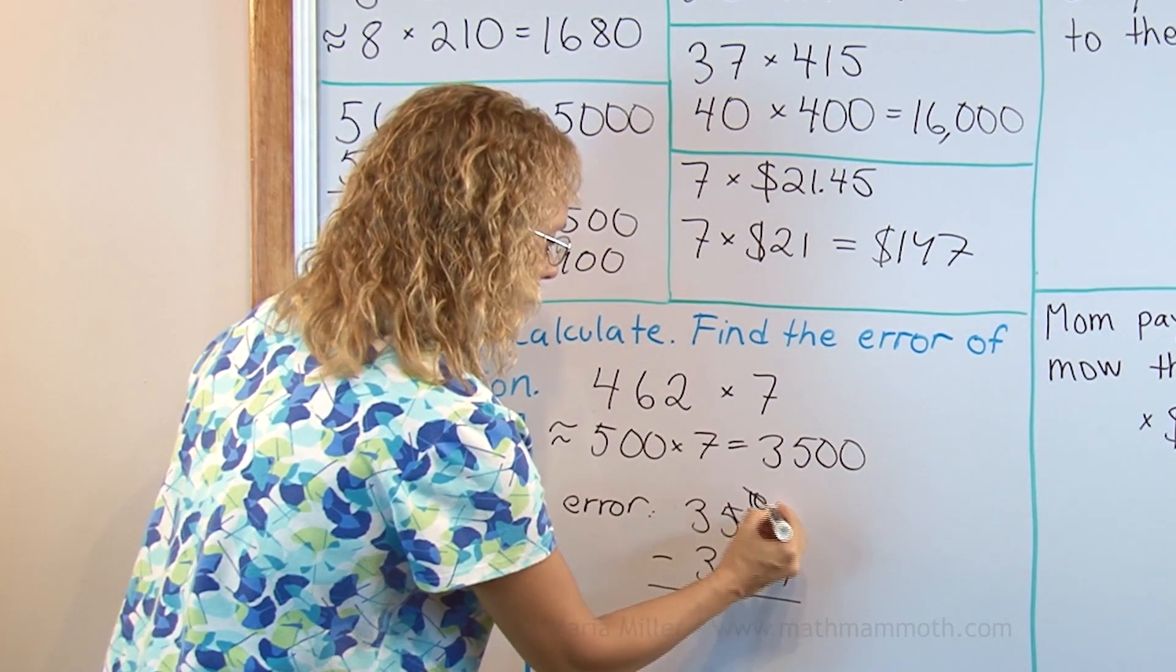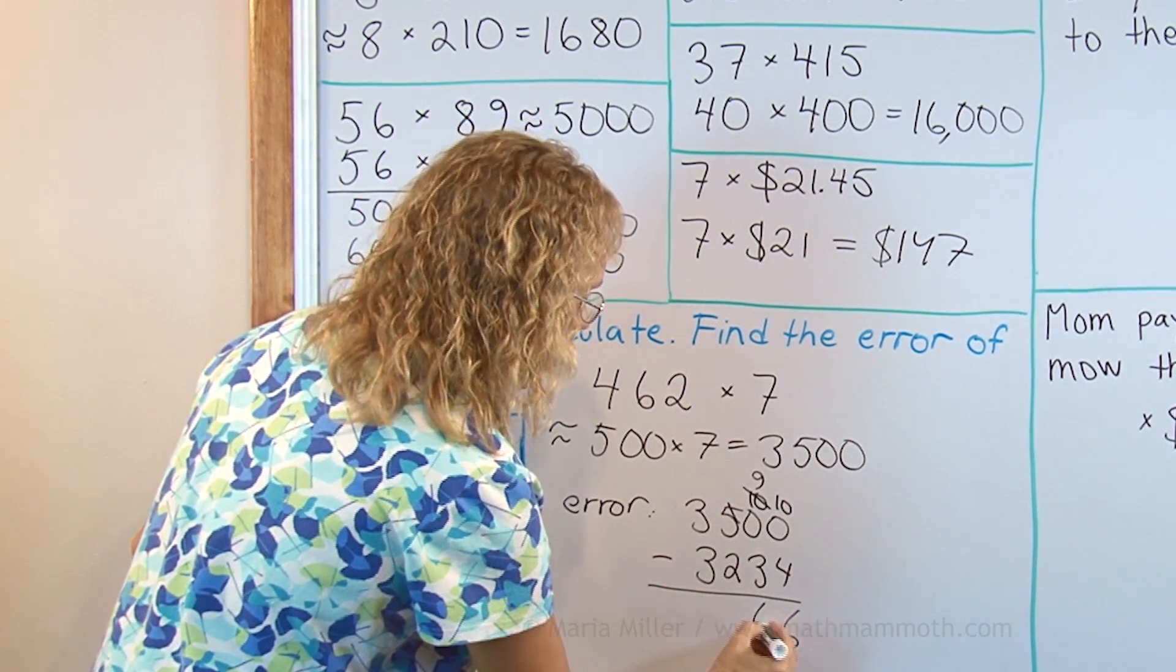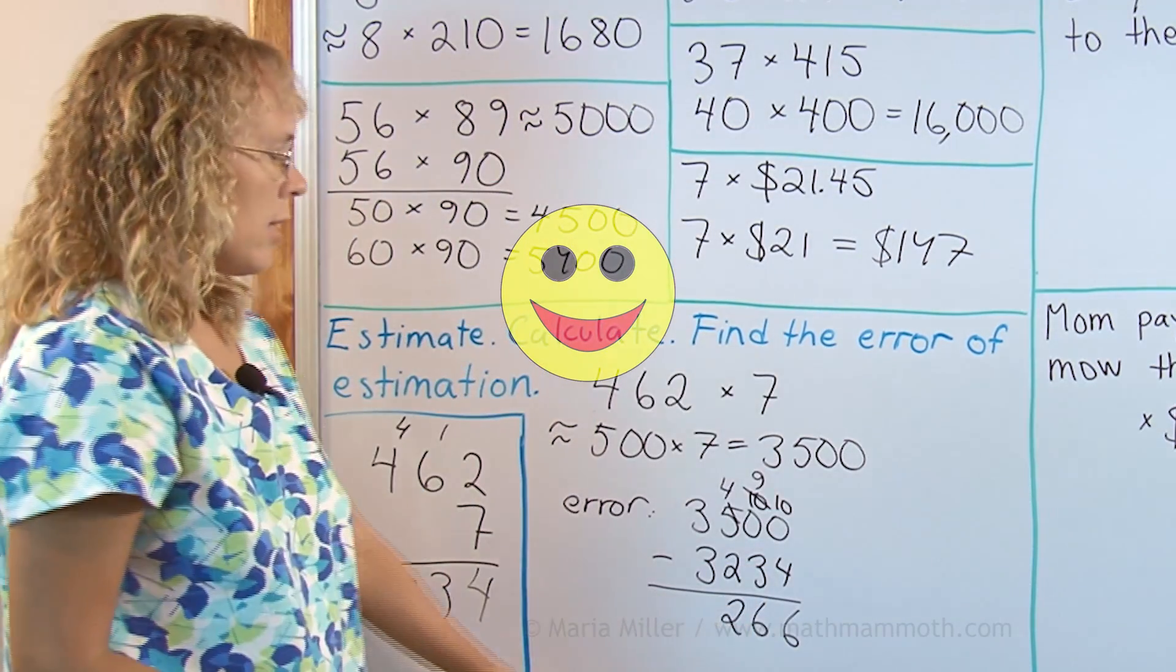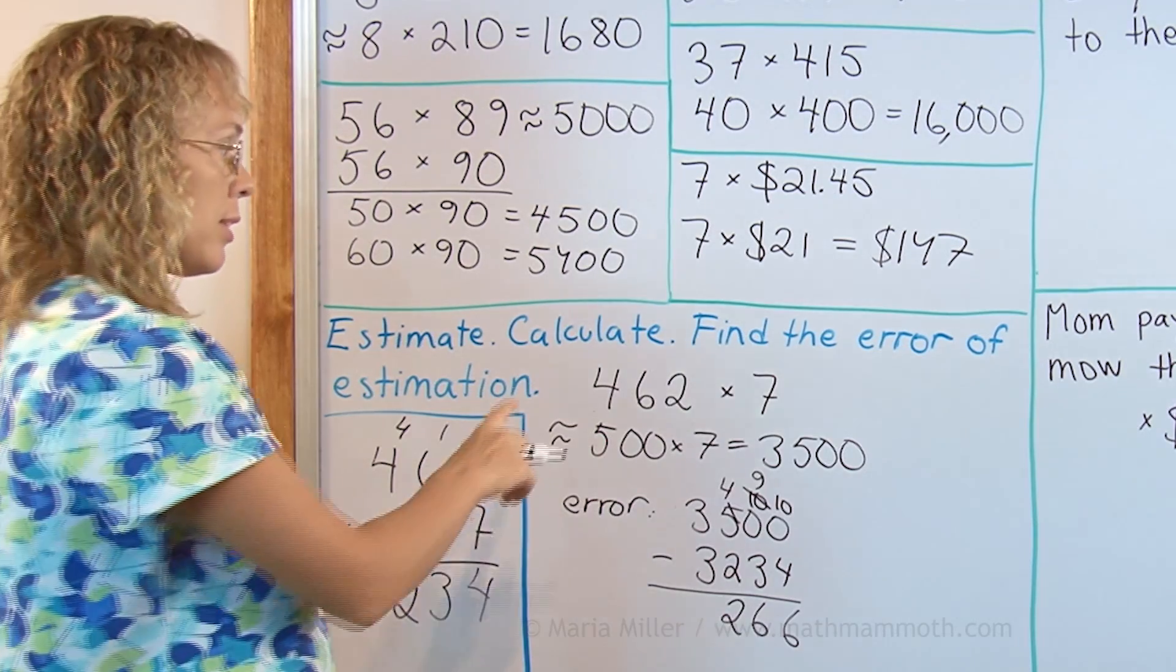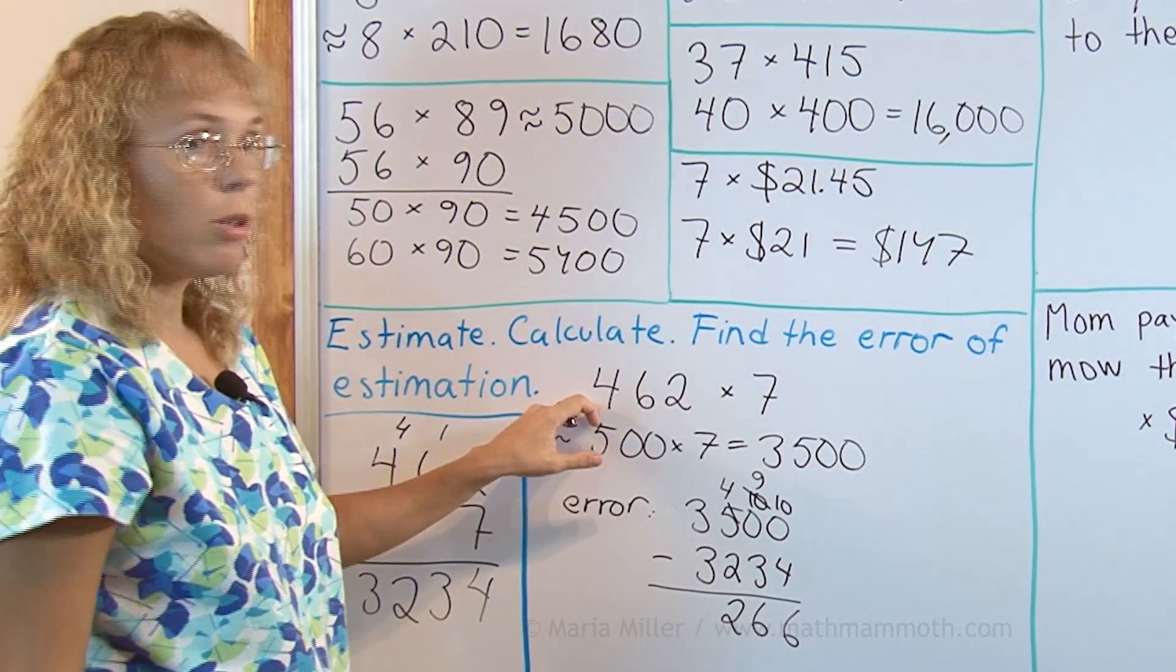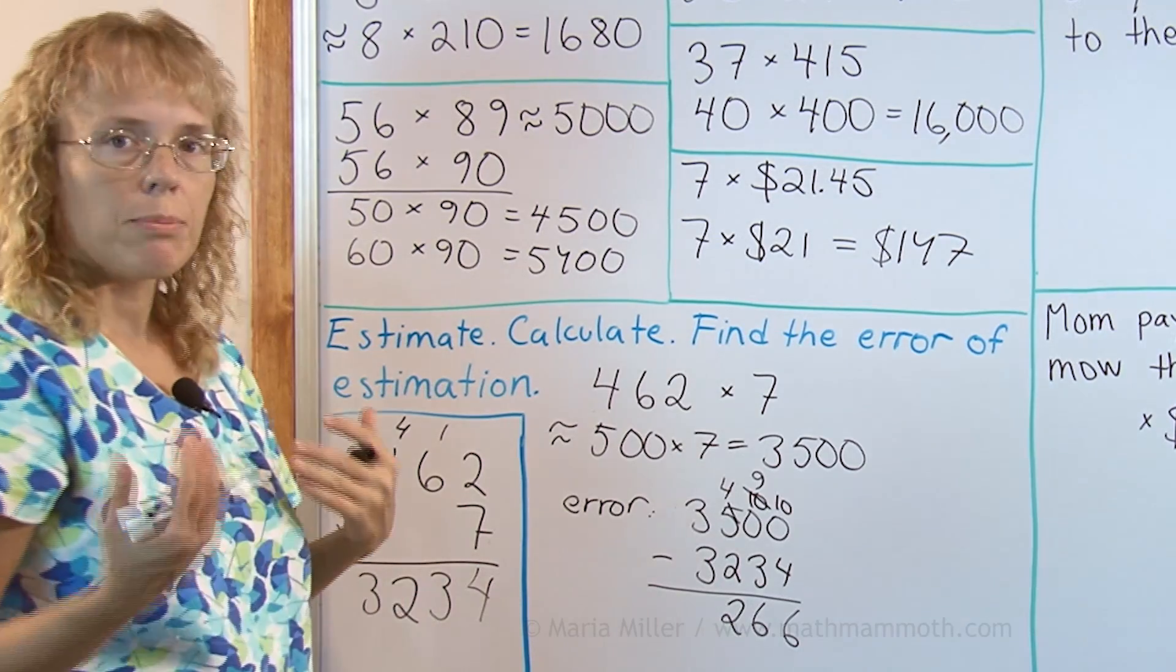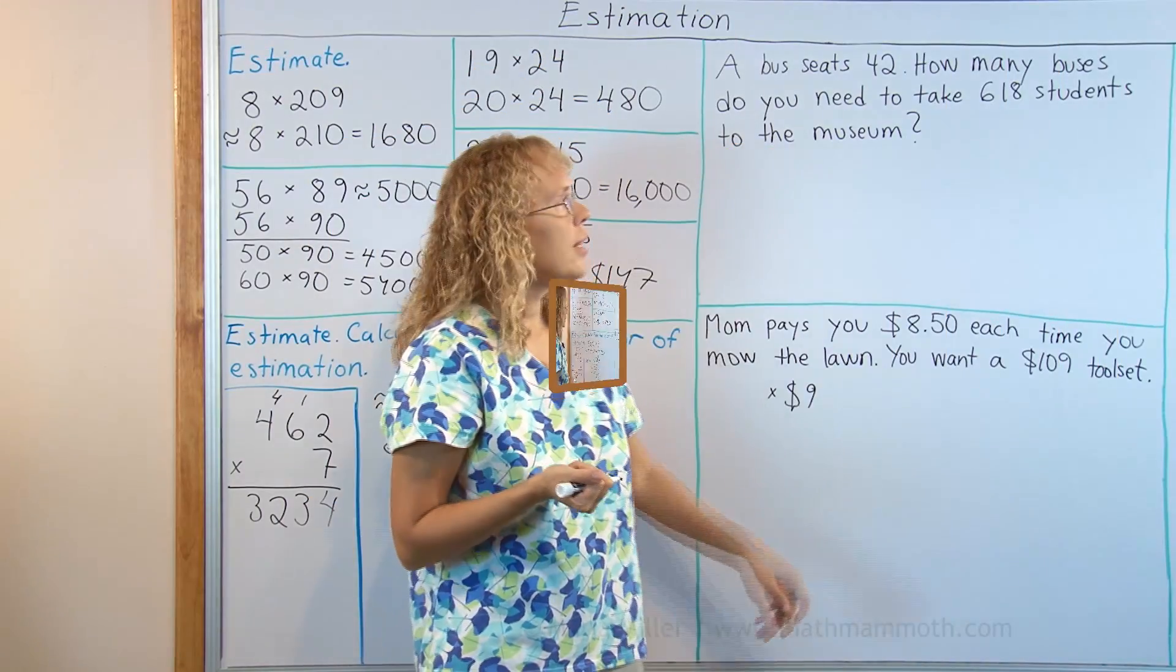The error would be this minus that. The 6, the 6 and here's 4, 266. The error of estimation is 266. You could improve this estimation by rounding to 460 right? 460 times 7 if you can do that mentally multiplying parts then you will get pretty close to this.